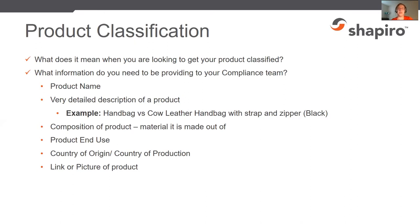We also need the country of origin, or the country of production. For example, if fabric is made in China and then shipped to Mexico where it's made into backpacks, the country of origin could be Mexico rather than China — because the product was completely transformed there. That final country where the product gets its essential character is your country of origin.